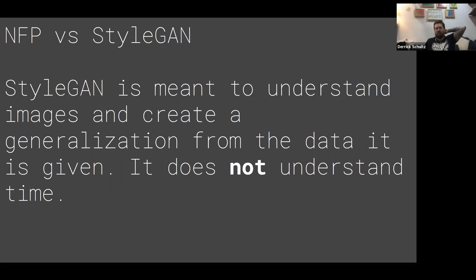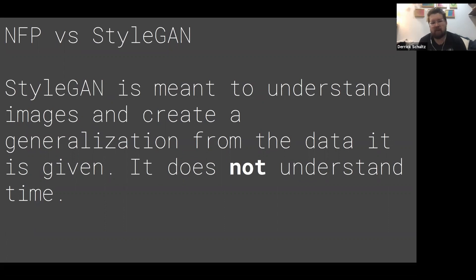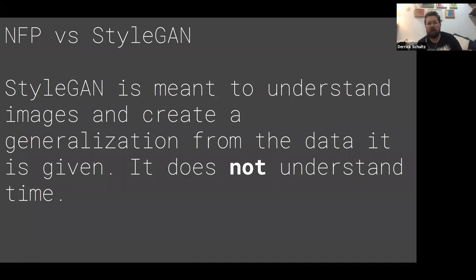One thing I want to talk about is the difference between Next Frame Prediction and StyleGAN. How do these models differ if you can produce videos from both? StyleGAN takes a bunch of images and tries to create a generalization from them, but it doesn't understand time — it doesn't understand sequence. If you give it 2000 frames from a video, it doesn't understand the sequence and just tries to generalize across all those images as separate images.